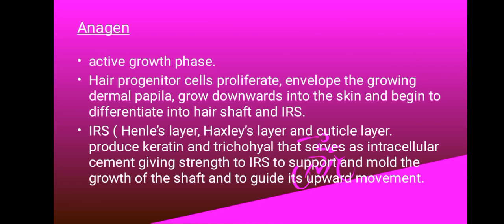We're going to begin with anagen. This is the active growth phase. In anagen, hair progenitor cells proliferate and envelope the growing dermal papilla. They grow downwards into the skin and begin to differentiate into the hair shaft and IRS. The cuticle layer produces keratin and tricho, which serve as the intracellular cement giving strength to IRS support, molding the growth of the shaft and guiding it in its upward movement.